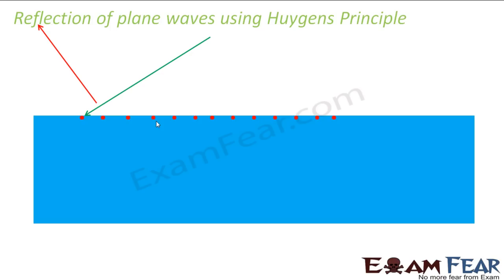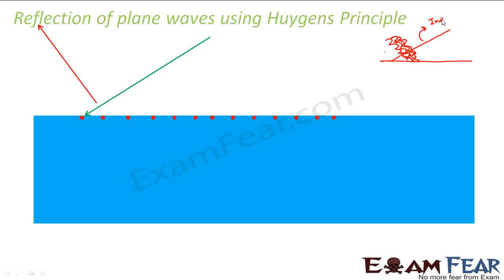A good observation is necessary here. Let us now study reflection of plane waves using Huygens principle. Suppose this is the boundary and these are my incident waves — incident waves would be somewhat like this. The points of same phase when joined together give the incident wavefront, which would look somewhat like this. So this will become the wavefront for the incident beam — this is my incident wavefront.